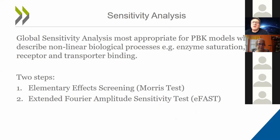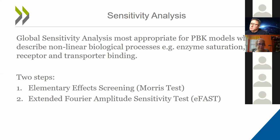The sensitivity analysis I'm going to talk about is called global sensitivity analysis, which is appropriate for biological models with nonlinear processes such as enzyme saturation and binding to receptors and transporters. Depending on the range of exposures, you might expose the system to positions where you get nonlinear behavior. Global sensitivity analysis is designed to cope with that. With PBK models, we often have a very large number of parameters — typically 50 to 60 — so we wish to find a way of initially screening the model and focusing on the smaller number of parameters that determine the variability in a given output.